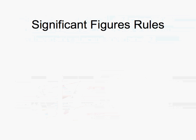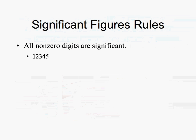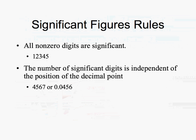Let's look at the rules of significant figures. The first rule is that all non-zero digits are significant. So any number that's a non-zero number is significant. For example, 1, 2, 3, 4, 5 — we have 5 numbers here, and all those numbers are significant, meaning we would have 5 significant figures in this particular number.